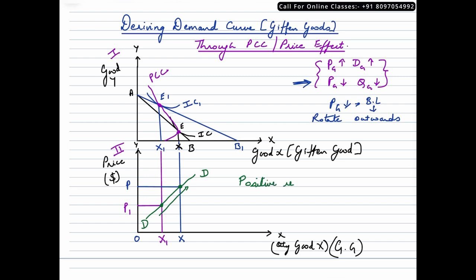It shows a positive relationship between price and quantity demanded. This is how the demand curve for Giffen goods would be derived under the price effect or PCC method.